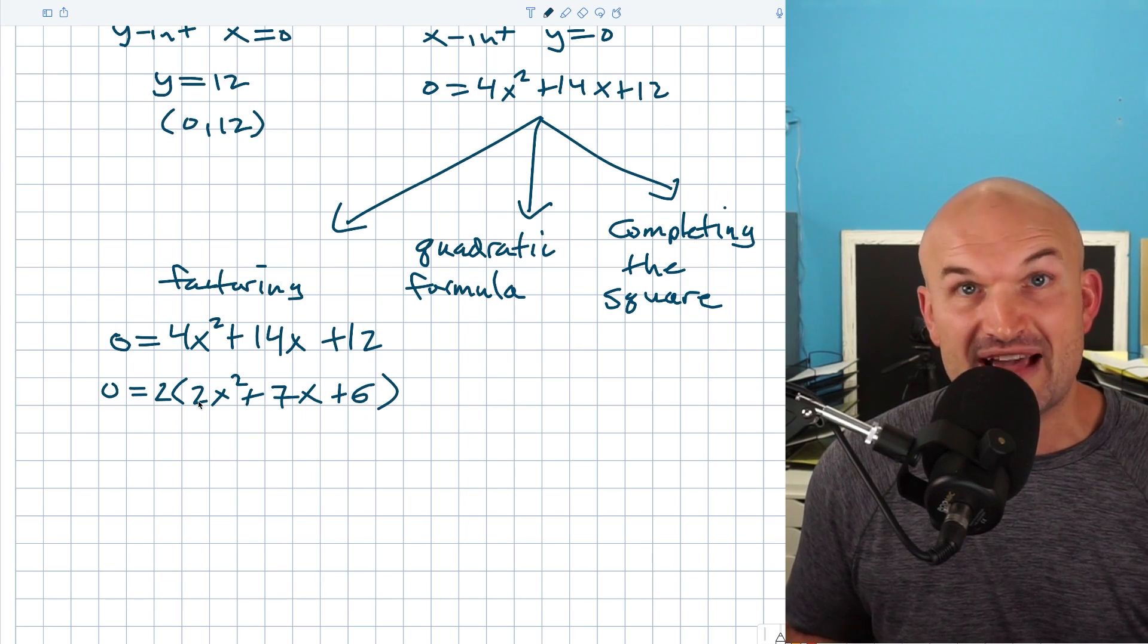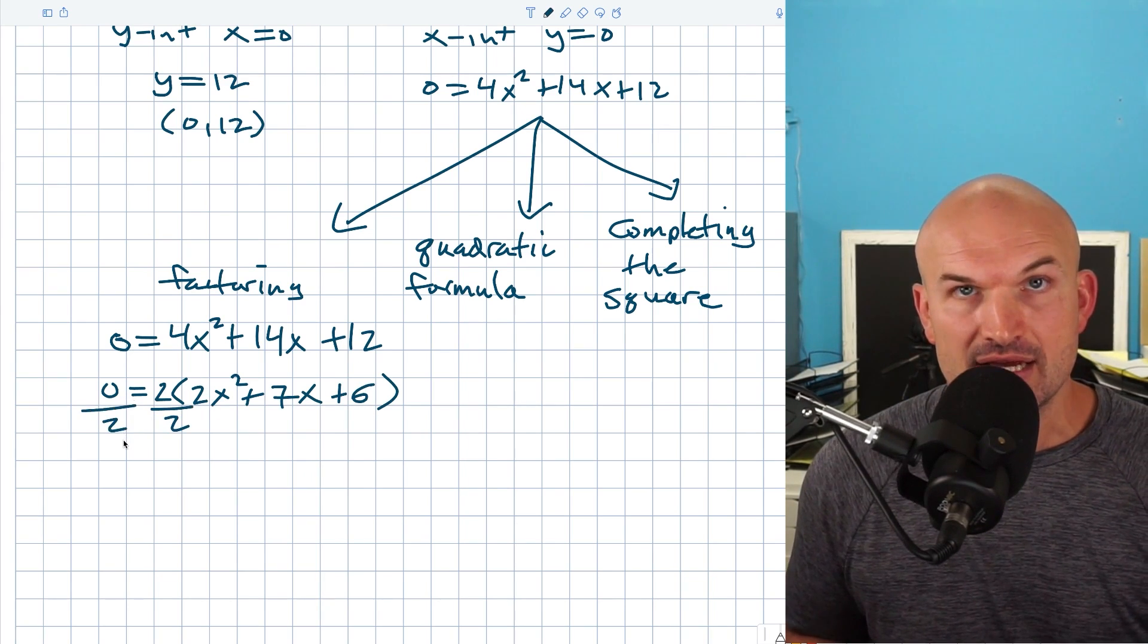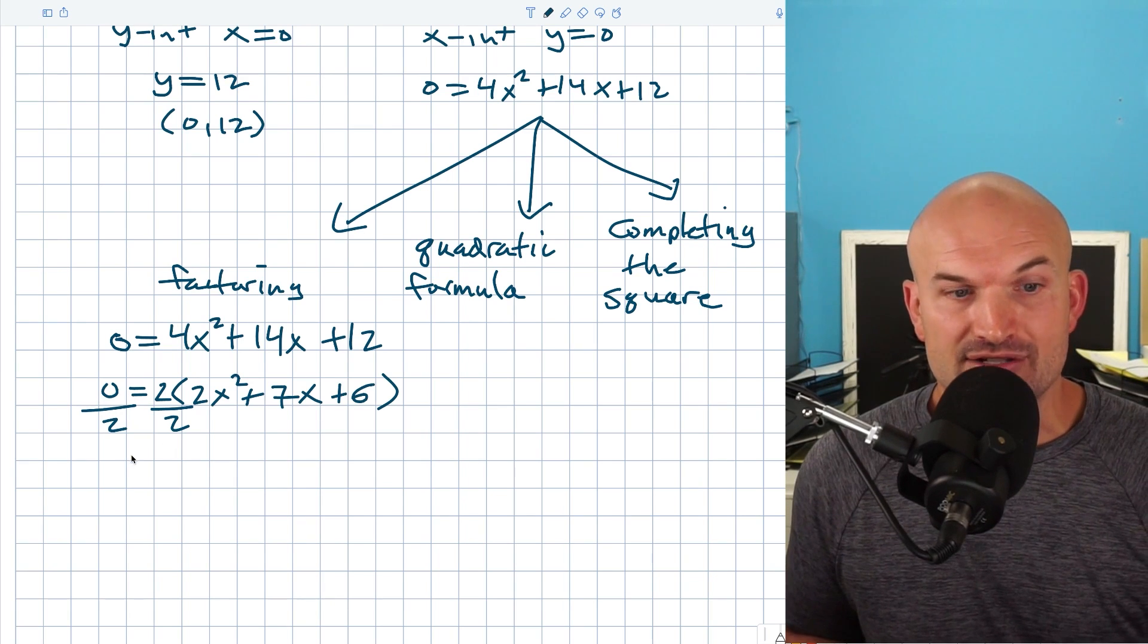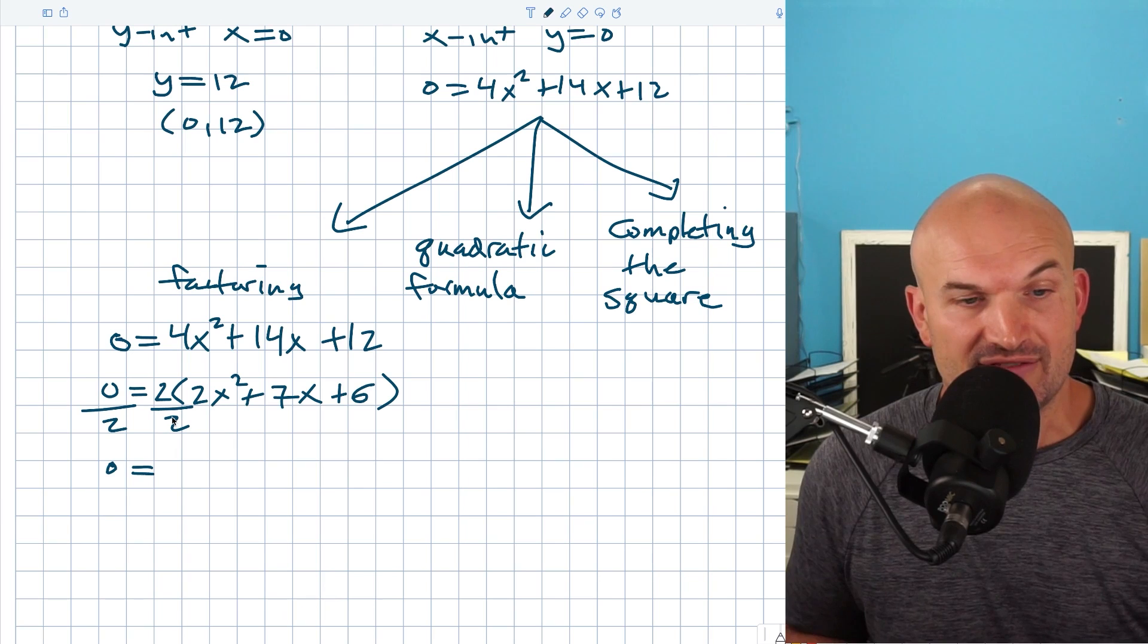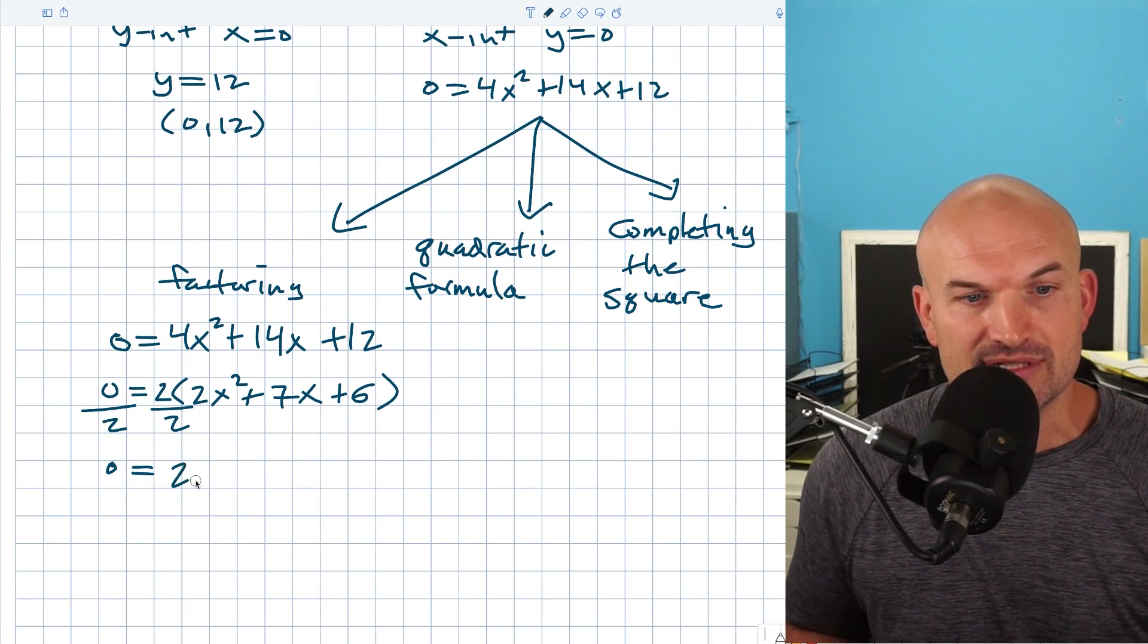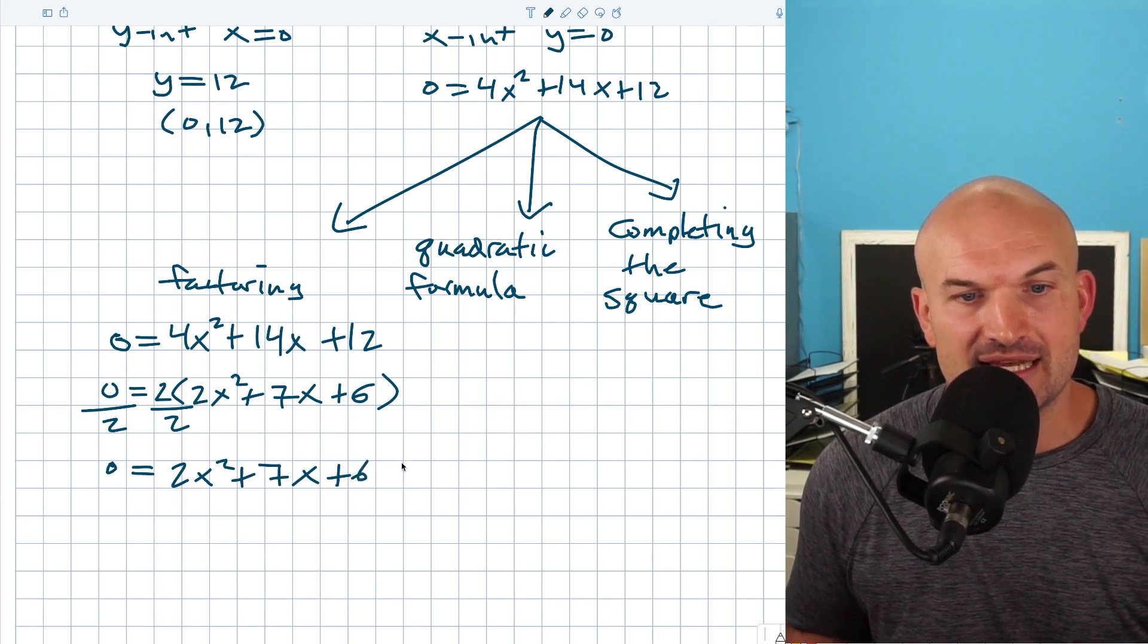Now, the cool thing about factoring out a common factor, like when I divide by two on both sides, that's not going to be changing my x intercepts. That's actually just getting rid of that value. So now, because that's just going to divide out, I'm left with 0 = 2x² + 7x + 6.